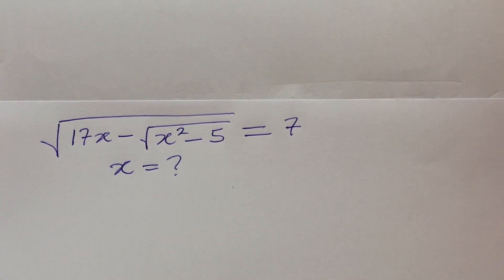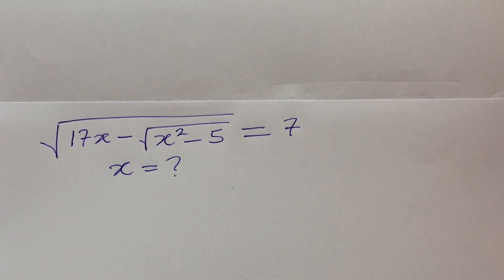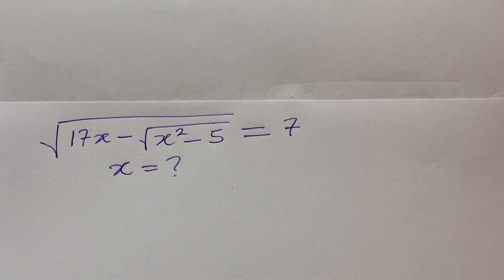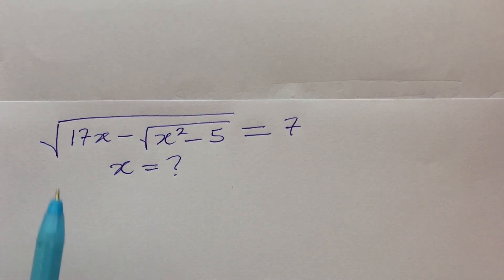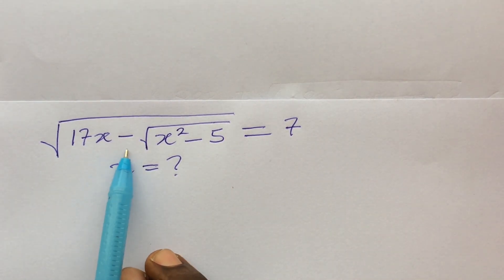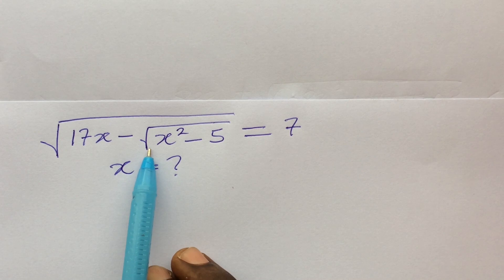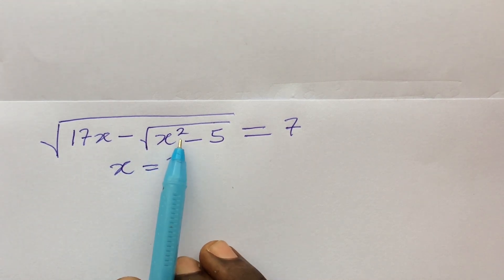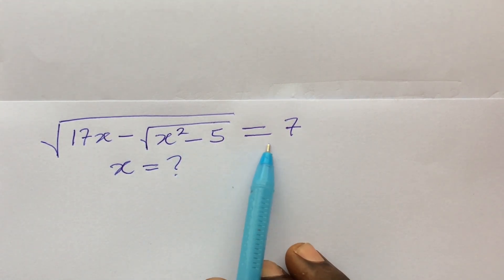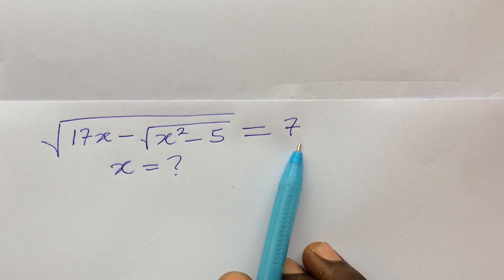Hello everyone, welcome to Online Mass TV. Before we proceed, I want to apologize for not being able to upload a video for the past few days — it's as a result of some challenges beyond our control. But we're here again. The question before us: find the square root of 17x minus the square root of x squared minus 5, equal to 7.